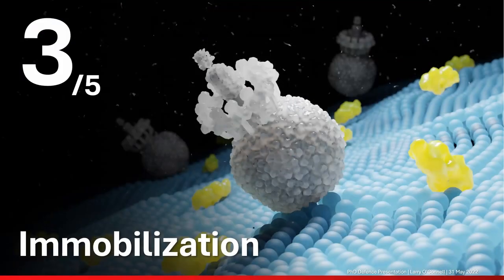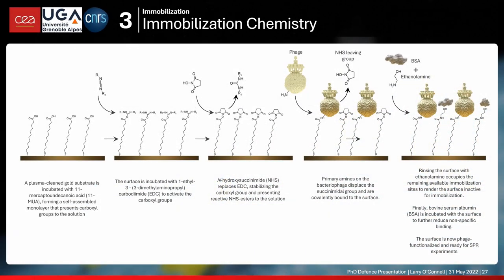Now that our bacteriophages were purified, we needed to immobilize them. Briefly about immobilization chemistry: we settled on 11-mercaptoundecanoic acid, 11-MUA, which forms a self-assembled monolayer on gold surfaces via a strong gold-sulfur bond, and crucially presents carboxyl groups to the suspension. You can activate these by incubating with EDC and then sulfo-NHS. Sulfo-NHS activates the carboxyl groups, which are susceptible to nucleophilic attack by primary amines — and if you have a protein ligand like a bacteriophage, there are primary amines present on the phage capsids.